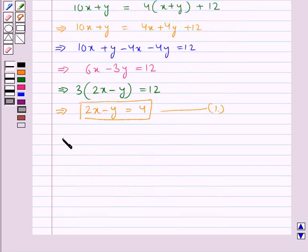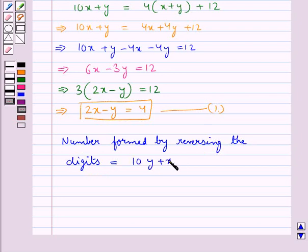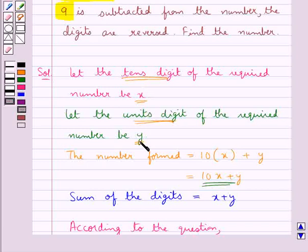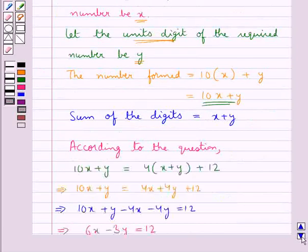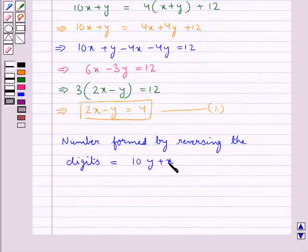Now let's see what the number formed by reversing the digits would be. Since x is the tens digit and y is the units digit, when we reverse the digits, y becomes the tens digit and x becomes the units digit, so the new number formed would be 10y + x.